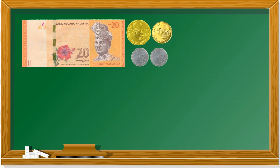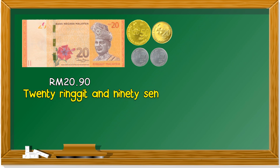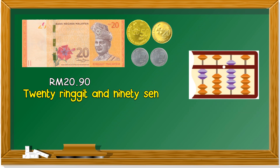How about this? We have 20 ringgit notes and we have some coins. Let's count the coins. 50 cent, 60 cent, 70 cent, 80 cent, 90 cent. So it's 20 ringgit and 90 cent. You write it like this: 20 ringgit and 90 cent. In Abacus, it's represented like this.